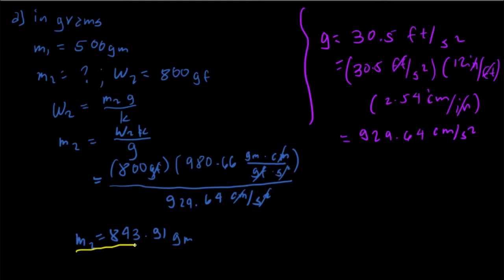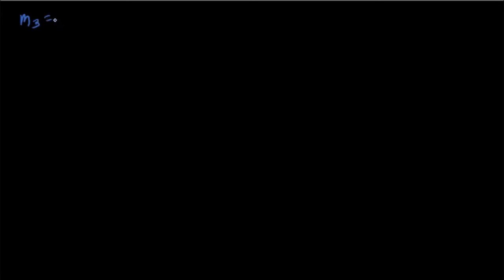Now for m3. The given unit for m3 is in poundals — the weight of m3 is 15 poundals, and the mass is unknown. We will solve for the mass of m3, ultimately in gram-mass, by first converting poundals to pound-mass.